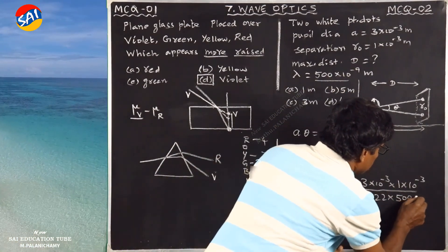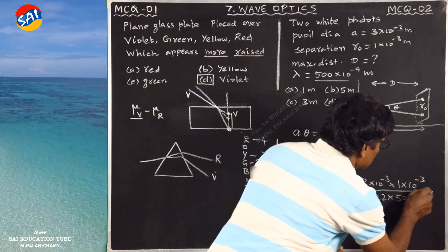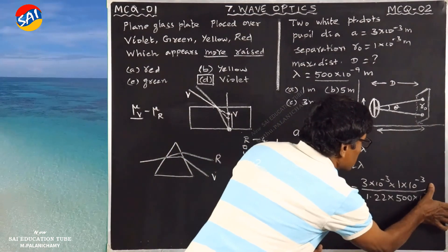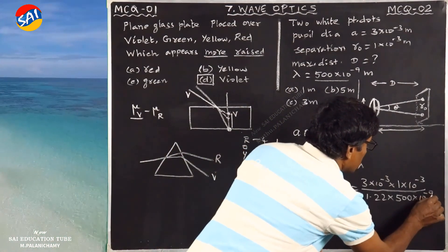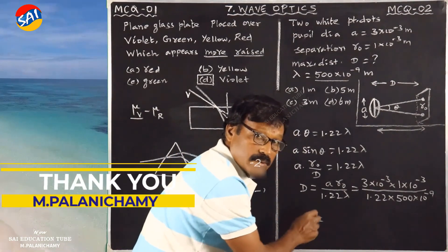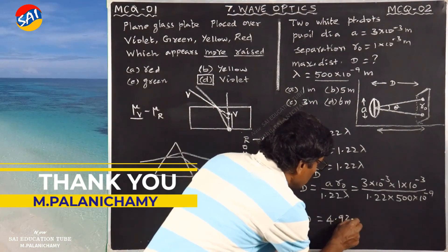500 into 10 power minus 9. This equals approximately 5 meters. Thank you.